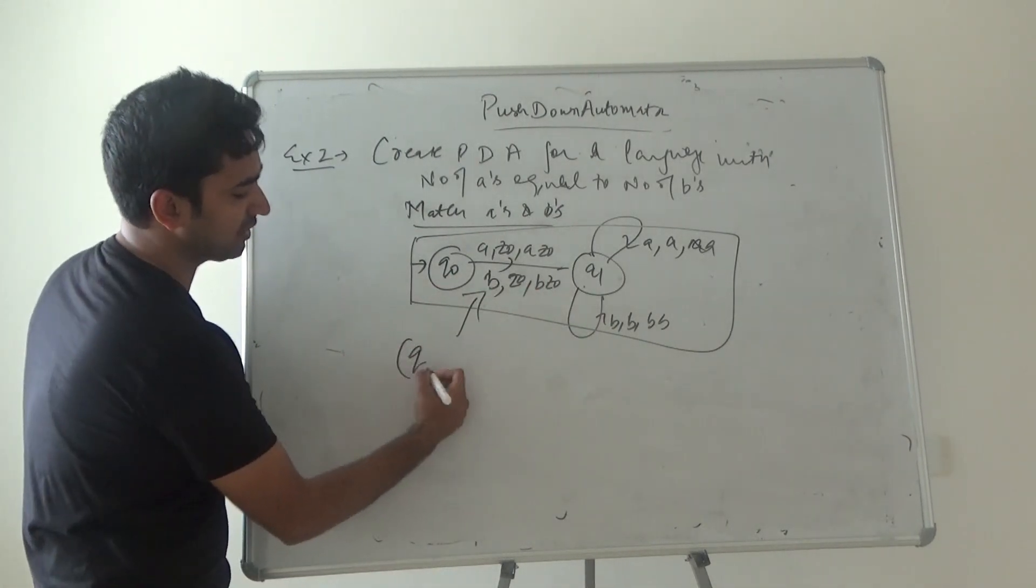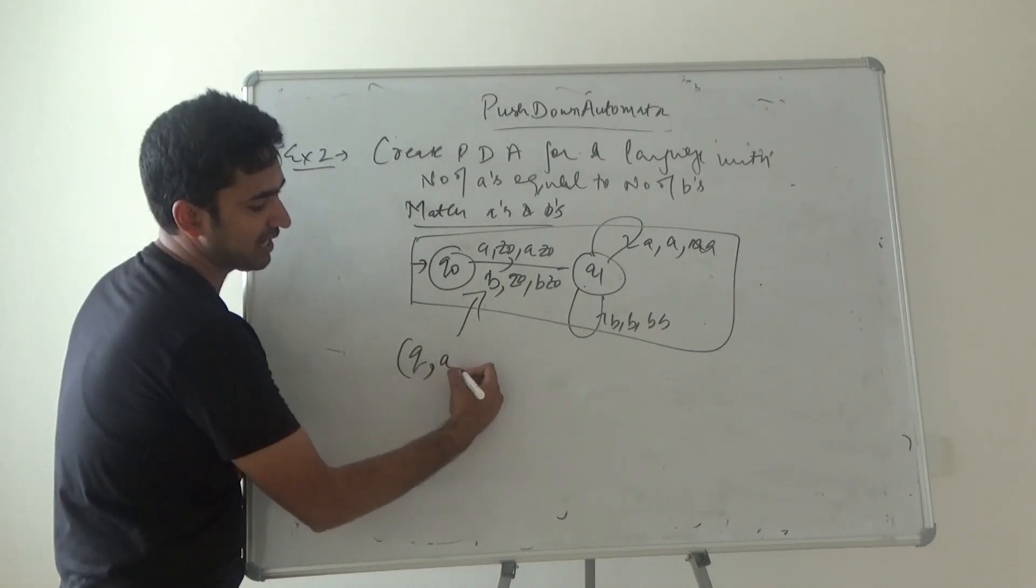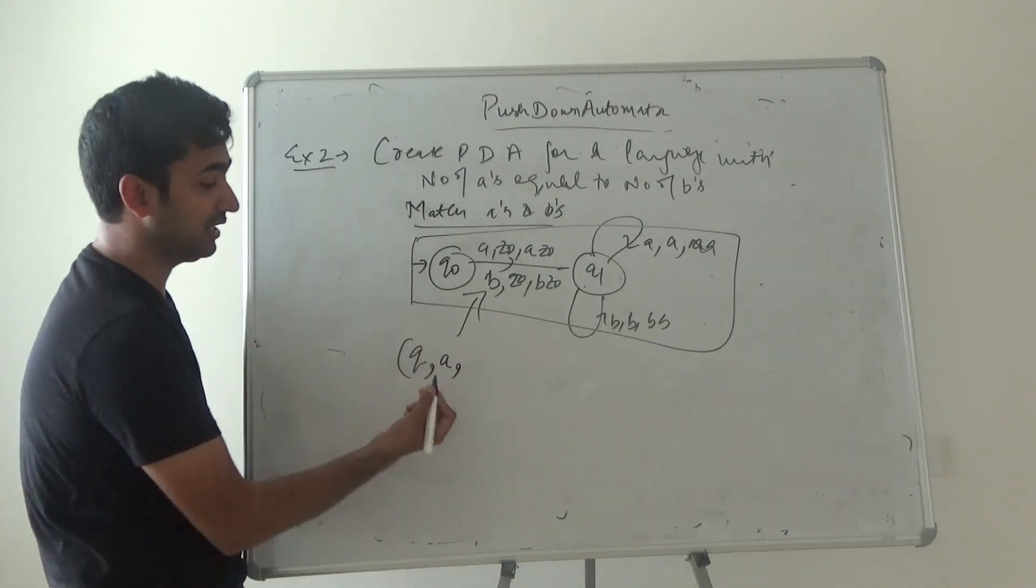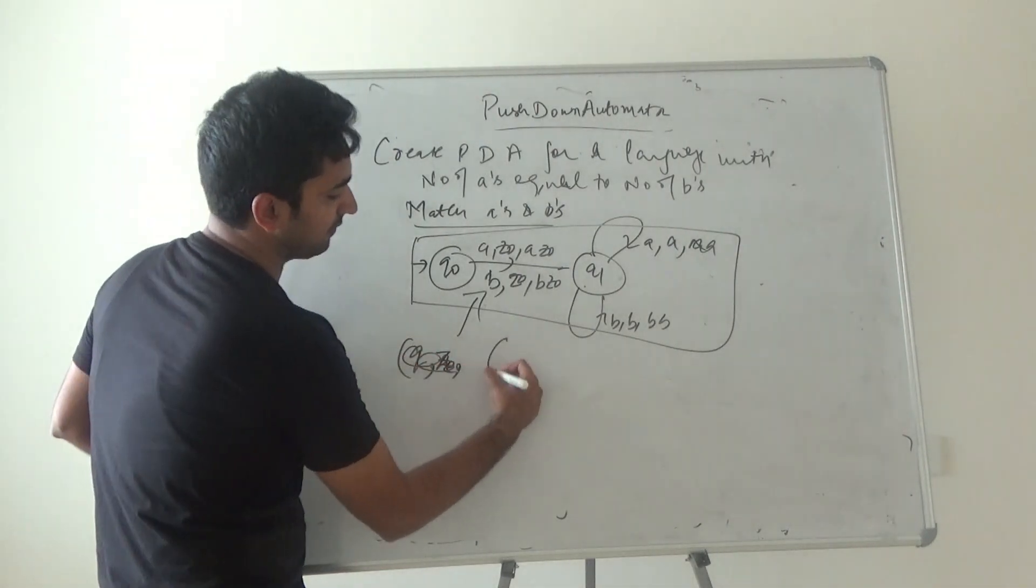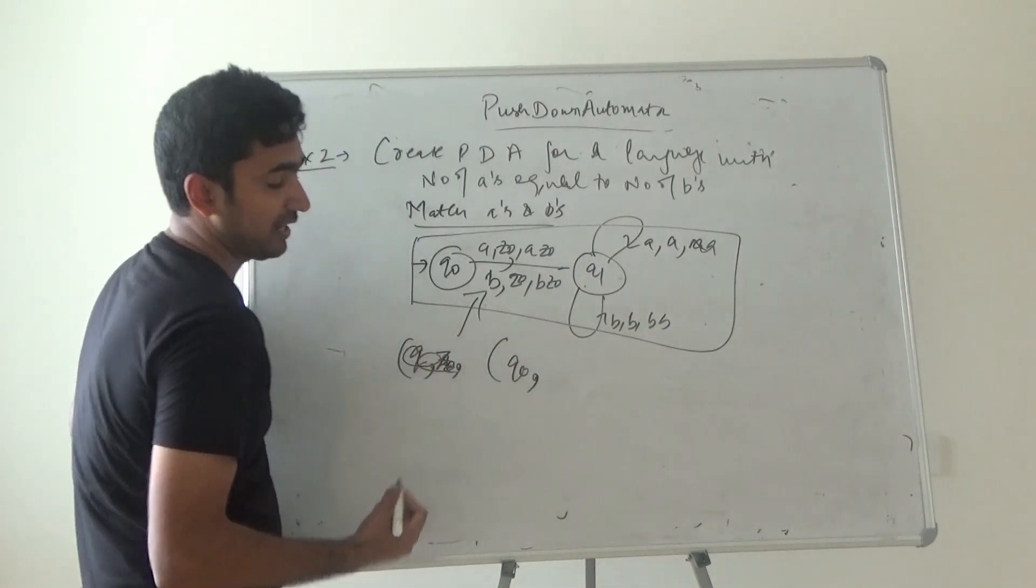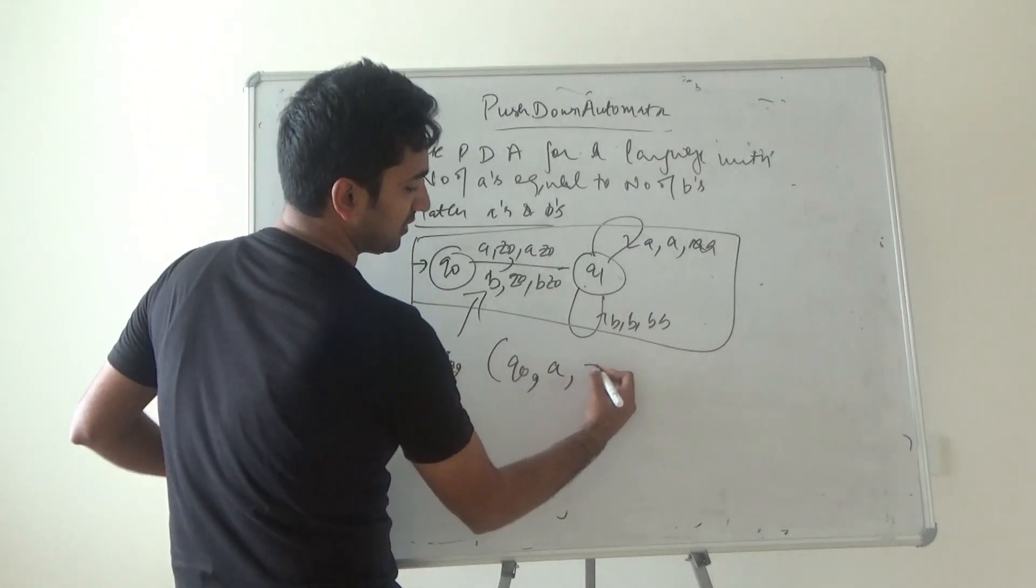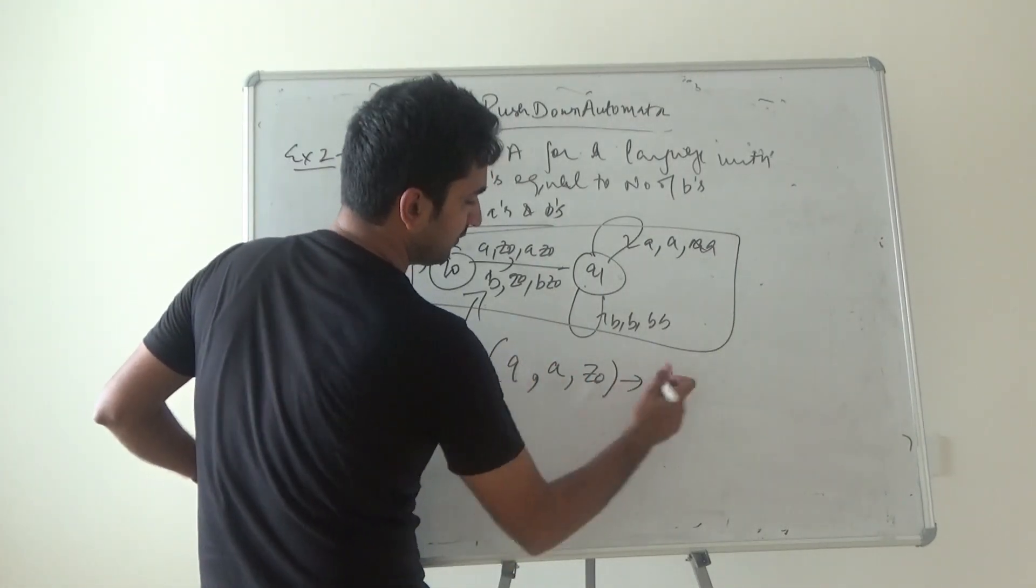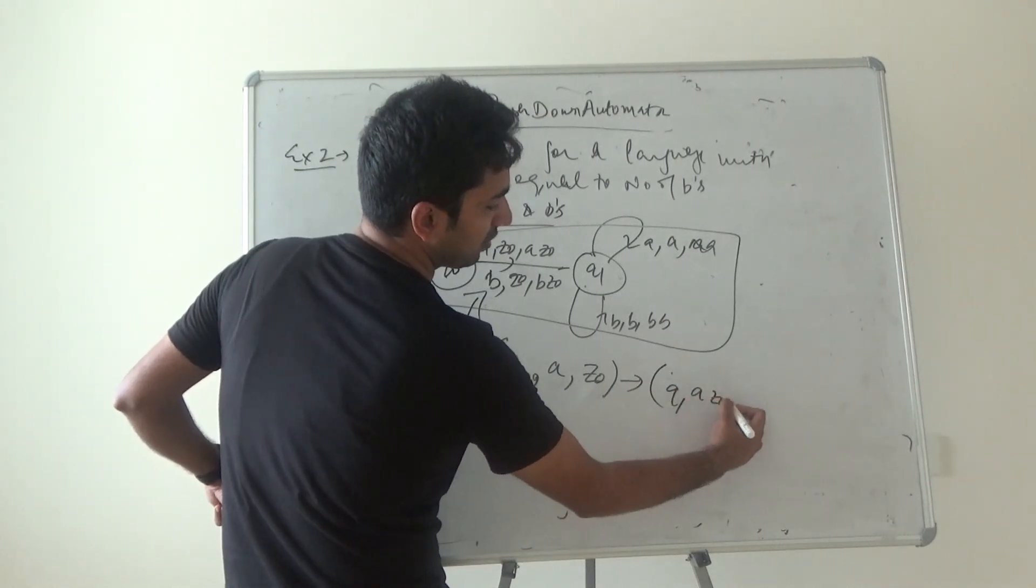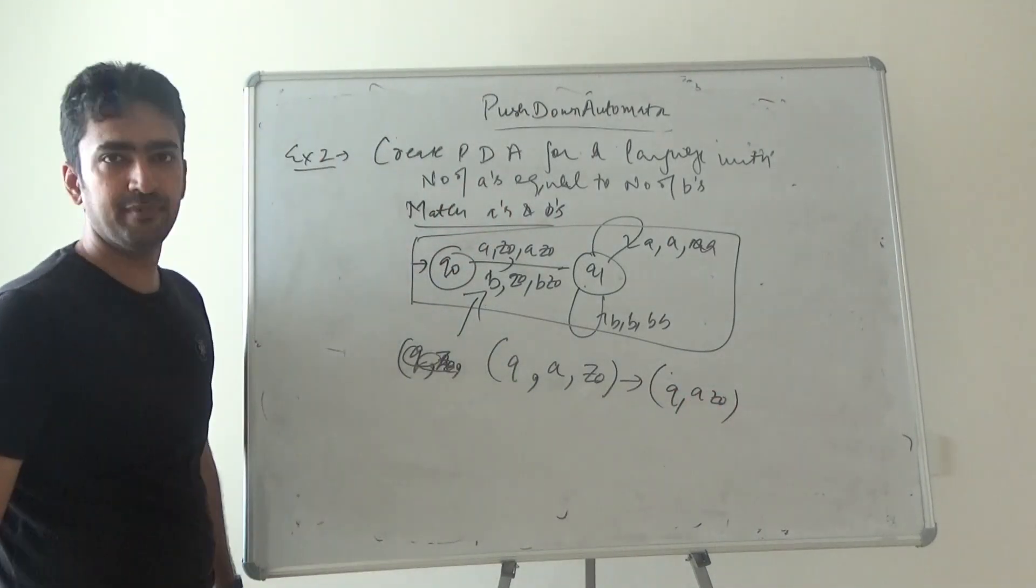Any state comes - let's say top of the stack is z0 initially. We'll start with state q0, an element that we have to process is a, and top of the stack is z0. I'll just write (q, a, z0) - this can be a possible thing. Then if any b comes and the top of the stack is z0, the answer can be (b, z0).